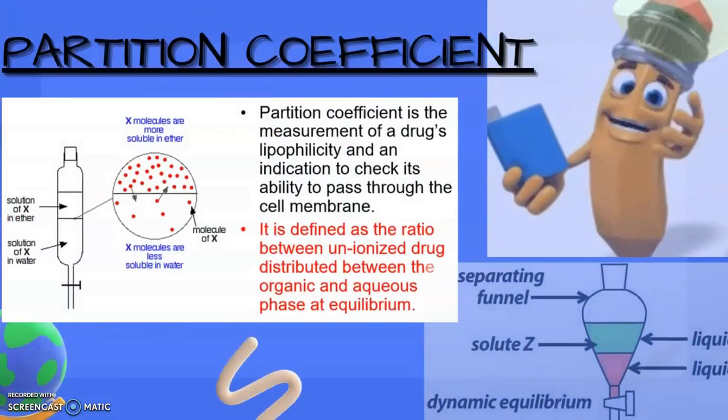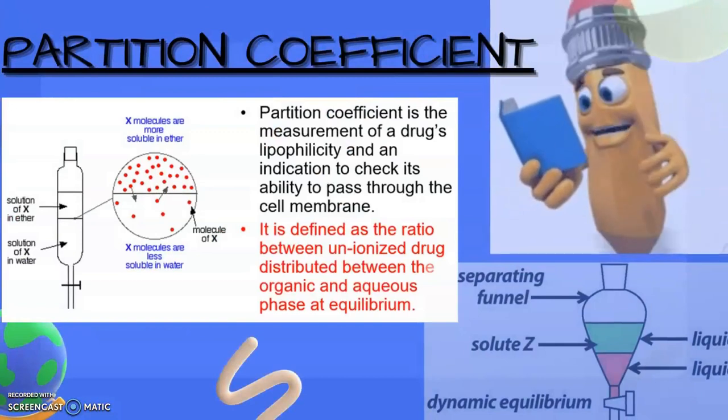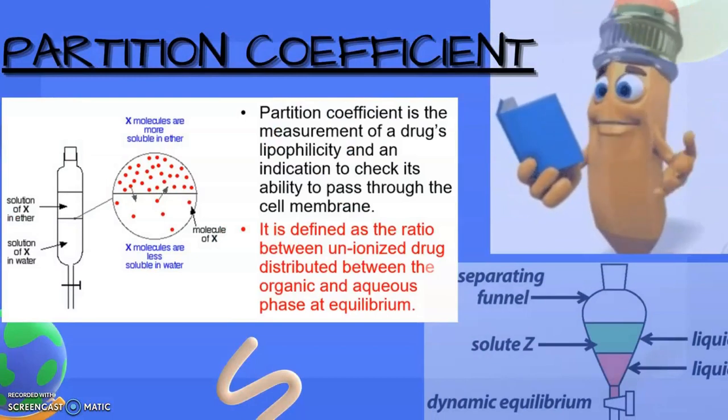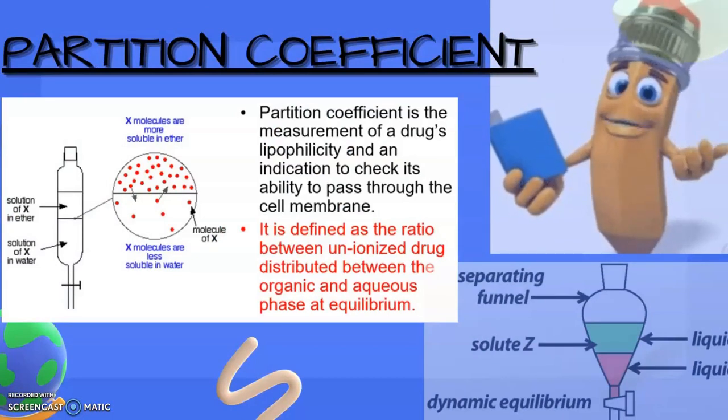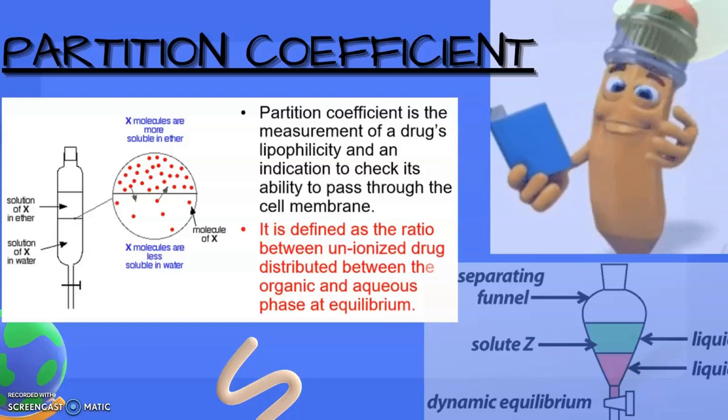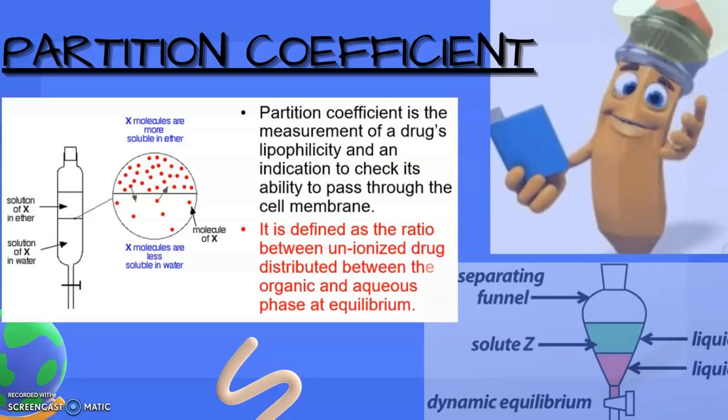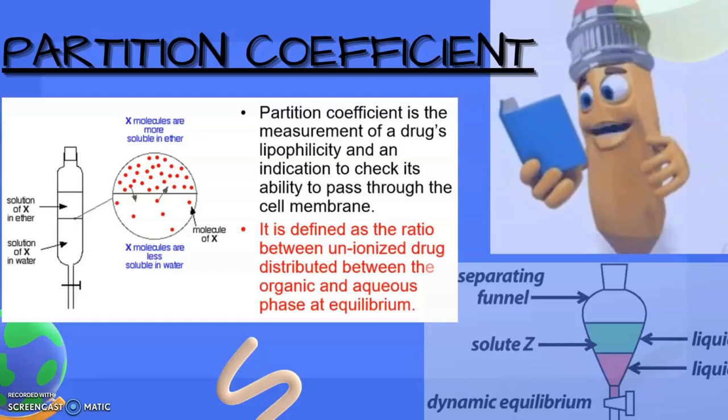Partition coefficient is the measurement of a drug's lipophilicity and an indication to check its ability to pass through the cell membrane. It is defined as the ratio between unionized drug distributed between the organic and aqueous phase at equilibrium. The diagram is showing partition coefficient.